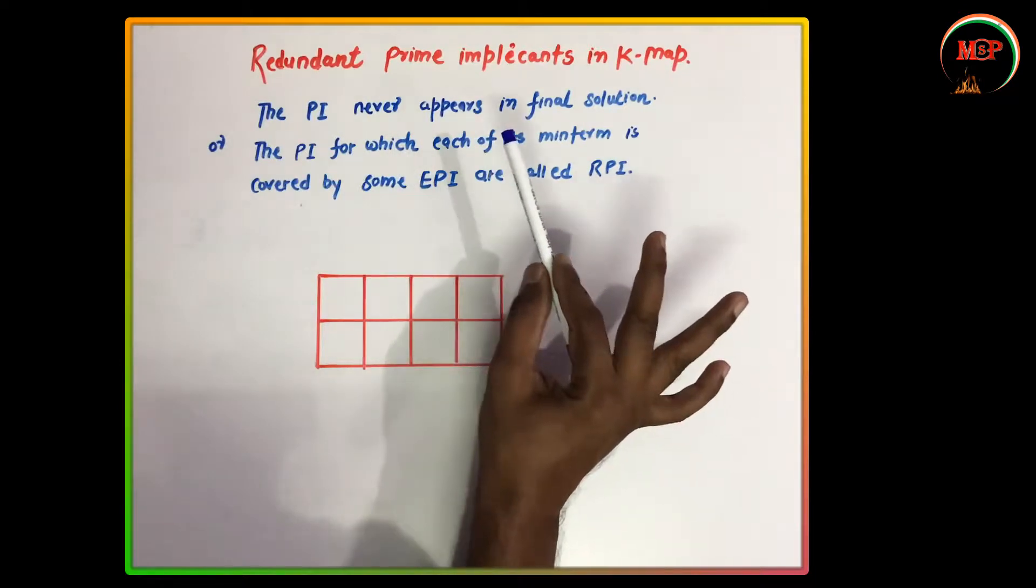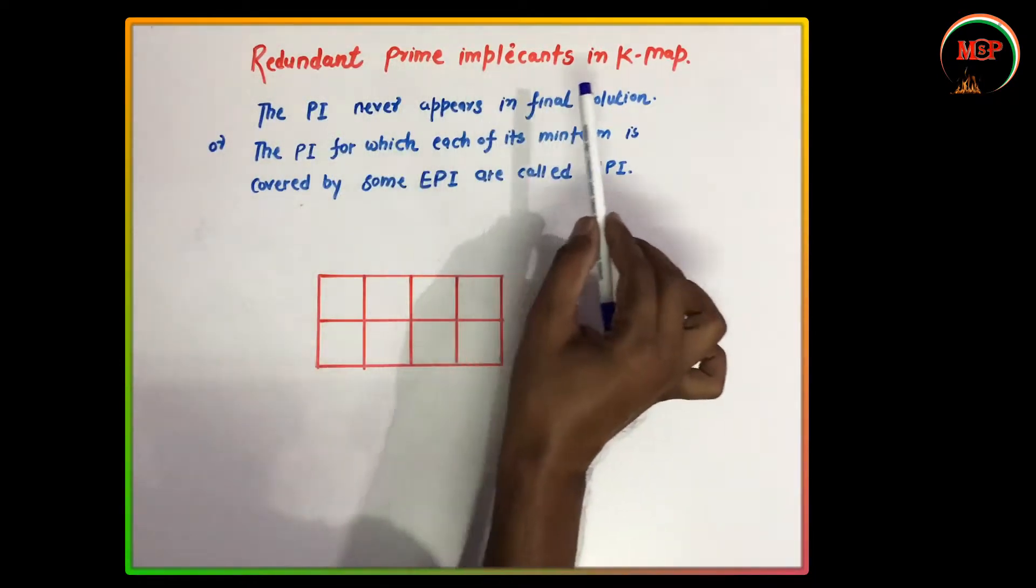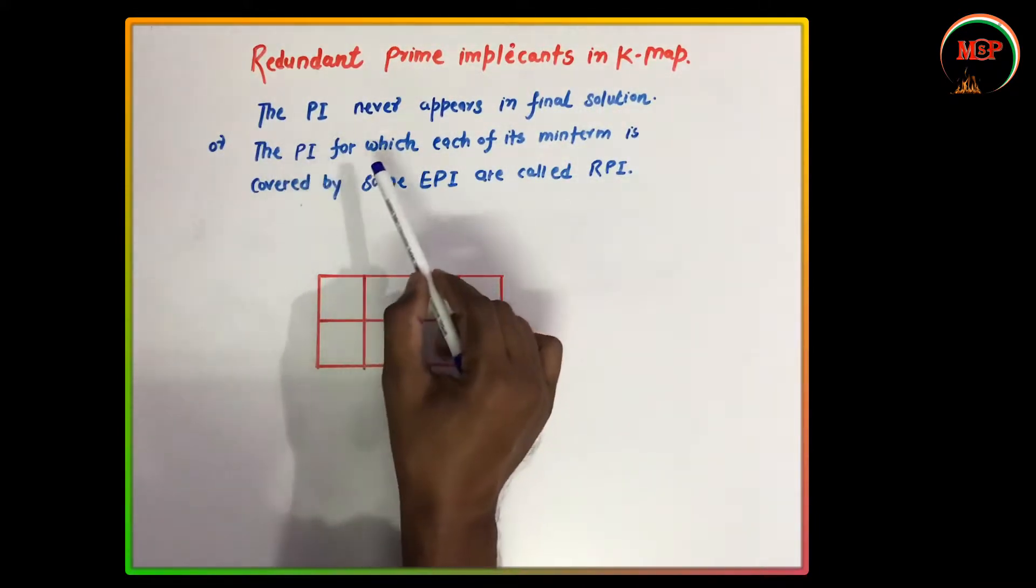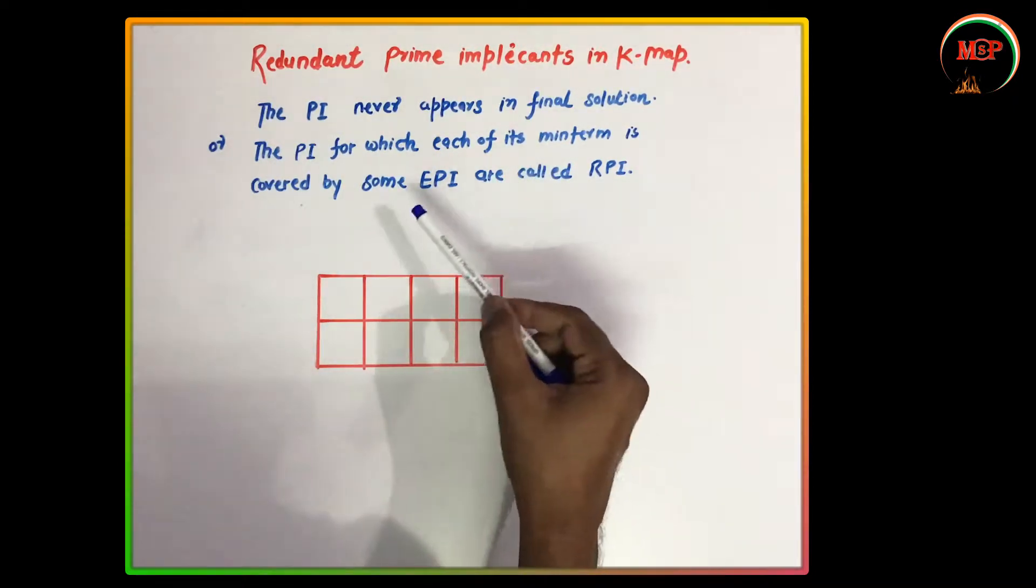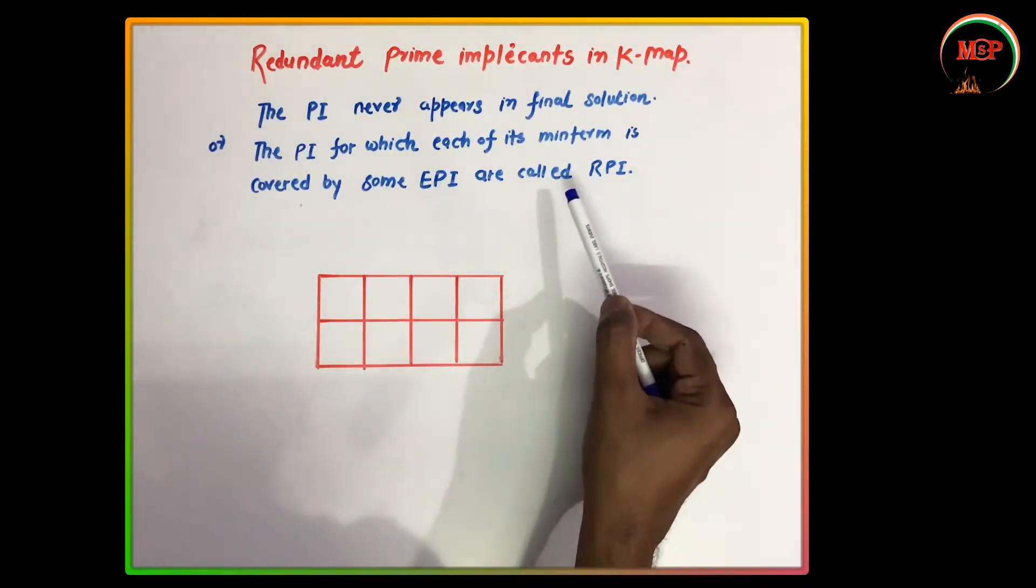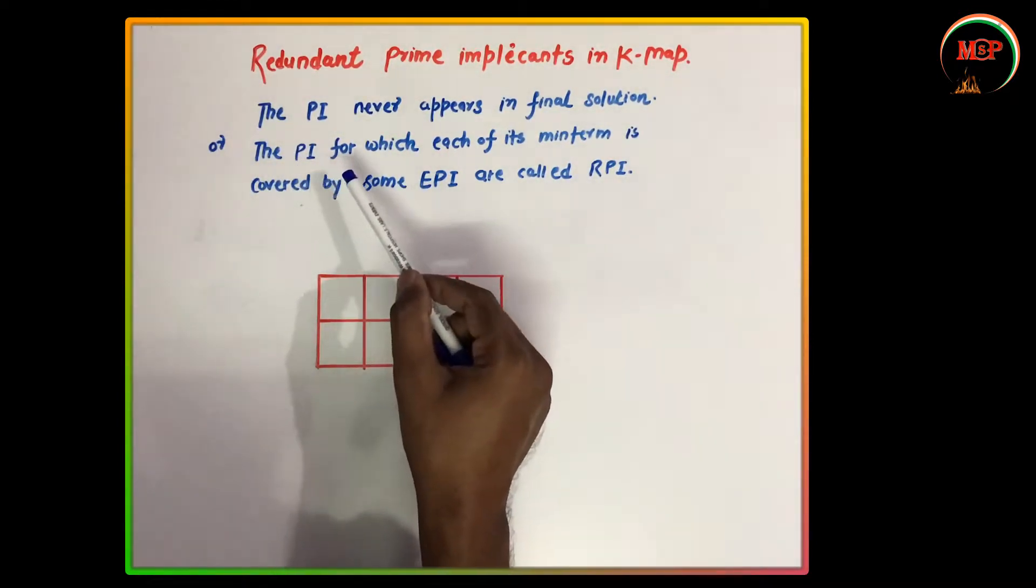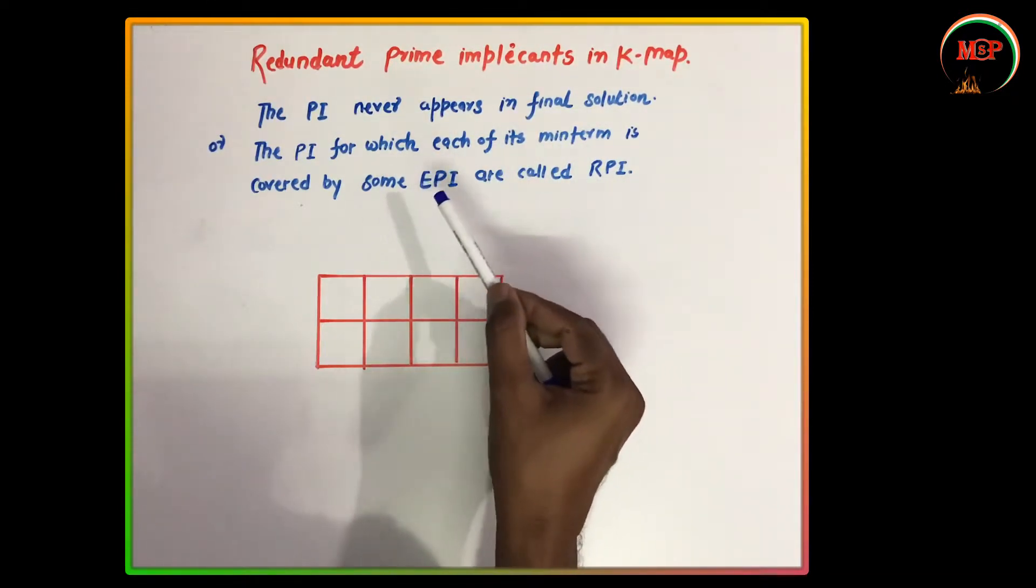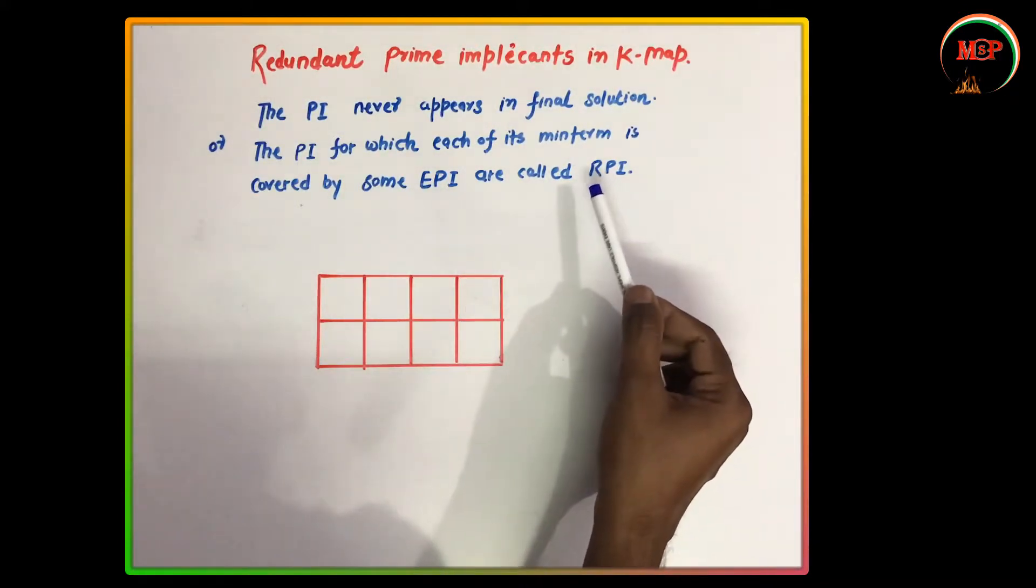Redundant prime implicants: The PI for which each of its main term is covered by some API are called RPI. The prime implicants which are covered by some essential prime implicants (API) are called RPI, that is, the redundant prime implicants.